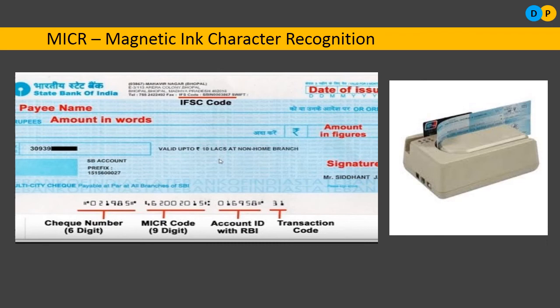The next one is MICR — Magnetic Ink Character Recognition. This device is used to read checks and is primarily used in the banking sector. On a check leaf, certain characters, digits, alphabets, or special symbols are written using a special magnetic ink in a certain font size and font type. This magnetic ink helps a device determine whether a check is authentic or a duplicate. In a bank, too many checks are issued each day, and MICR allows bankers to easily authenticate whether each check is valid or invalid and process it accordingly.